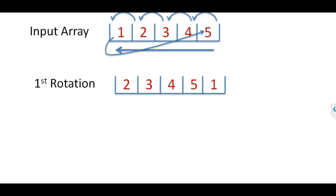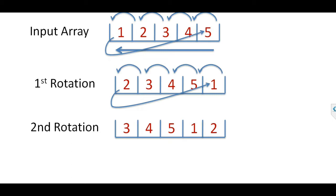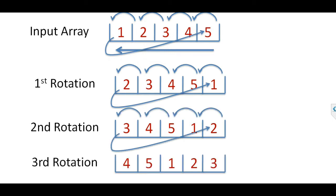If we do one more rotation, the second rotation output will be 3, 4, 5, 1, 2. Again one element has shifted to the left. For the third rotation it will be 4, 5, 1, 2, 3. As you can see, elements are just shifting left in each rotation. So if you are given an array and asked for the output after three rotations, it has already moved 3 positions to the left, and the first 3 elements have been shifted to the end of the array.